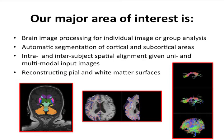Some of the major projects we are working on in our lab are the following. We do brain image processing for both individual and group analysis. We work on segmentation tools that do automatic or semi-automatic segmentation of cortical and subcortical areas of the brain. We are interested in writing algorithms that do intra and inter-subject spatial alignment between uni and multimodal images, and we are also interested in reconstructing different surfaces of the brain.